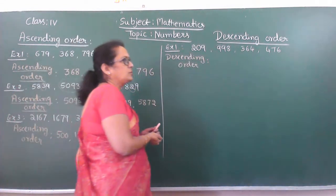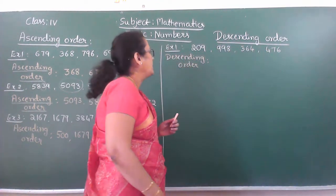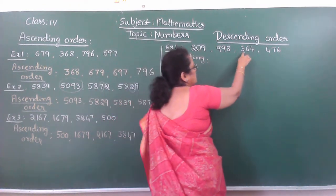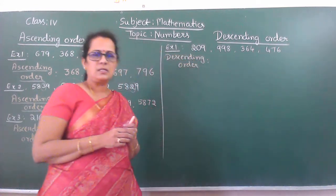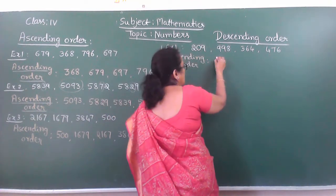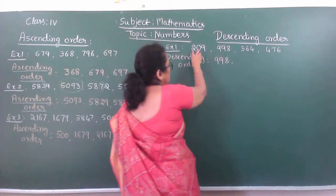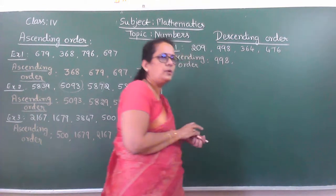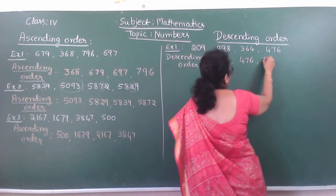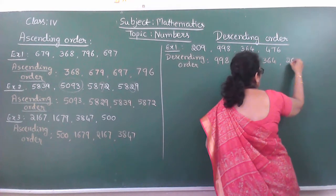Now, go through the hundreds place value number: 2, 9, 3, 4. So which is the biggest one? For descending order, you have to write the biggest one first. Among these, 998 is the biggest one. Next is 476. The next one is 364. And the very smallest number is 209.